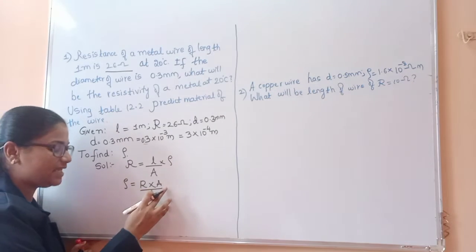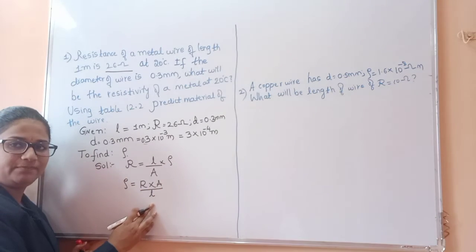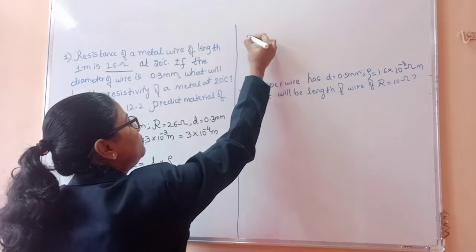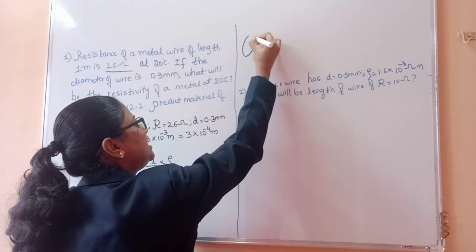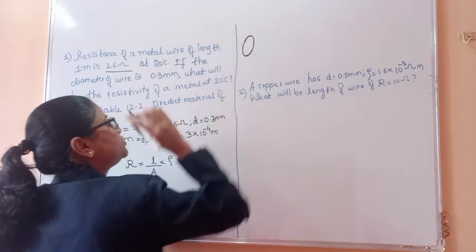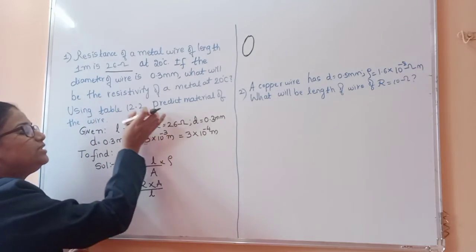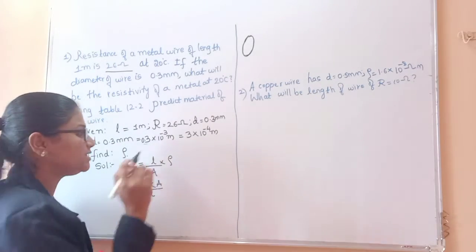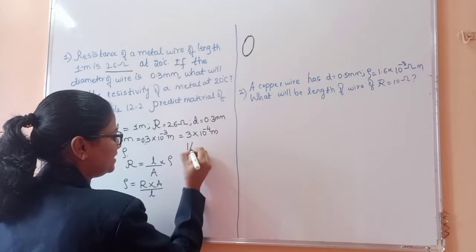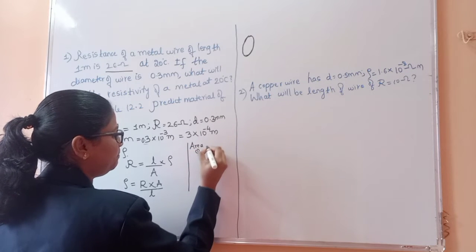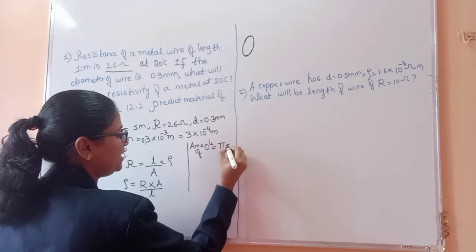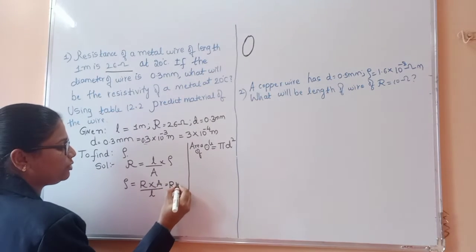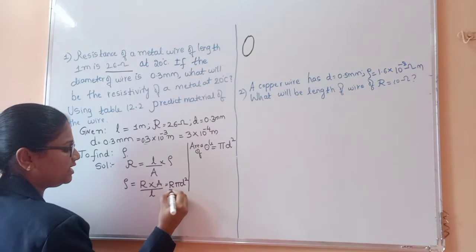For the solution, the formula for resistance is R = (ρ × L) / A. Rearranging for resistivity: ρ = R × A / L. Here A is the cross-sectional area. Since it is a circular wire and diameter is given, area = π D² / 4. We substitute: ρ = R × π D² / (4 × L).